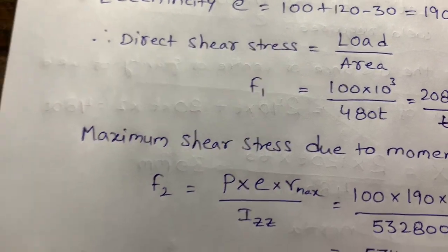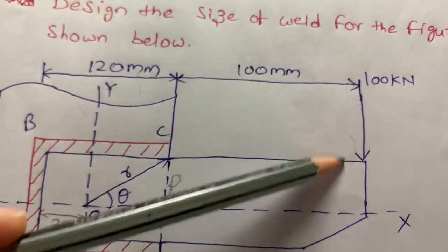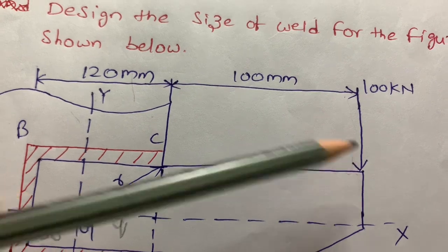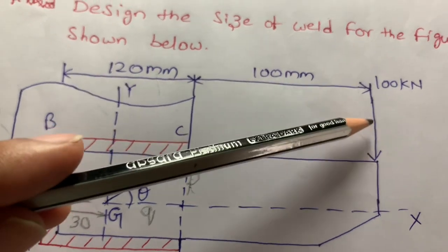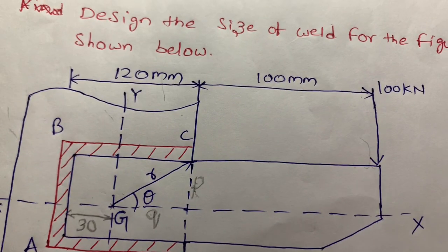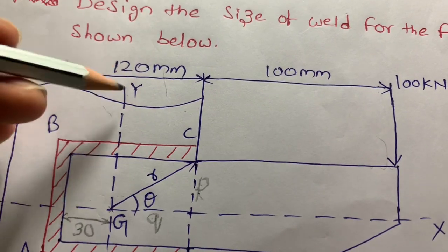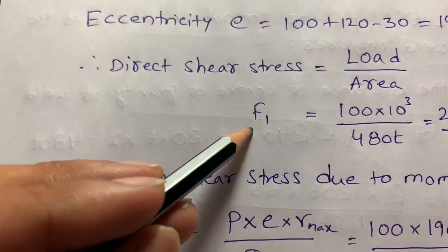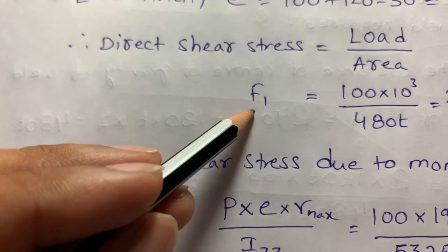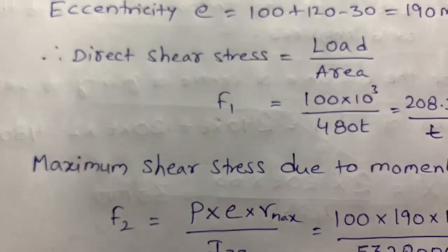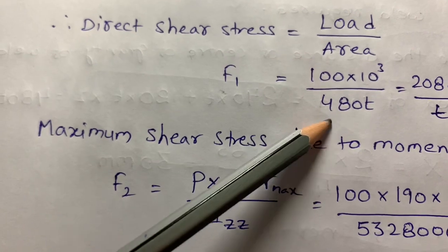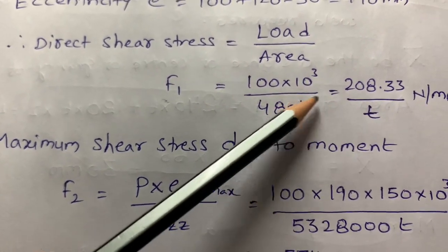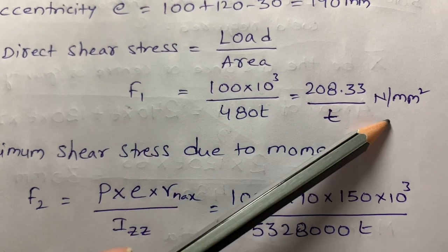Direct shear stress: we are transferring the 100 kN load to the column by distributing it equally. The transferring load is considered as F1. Shear stress equals load divided by area. Load is 100 kN (written as 100,000 N) divided by area 480T. Solving this gives F1 equal to 208.33/T N per mm².